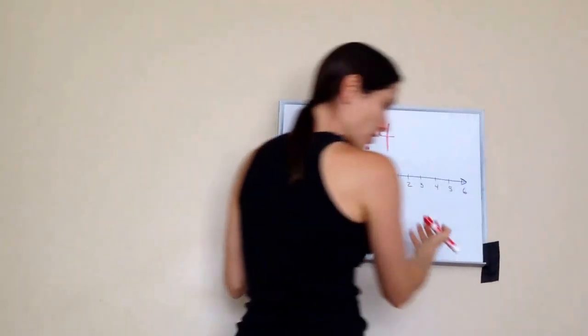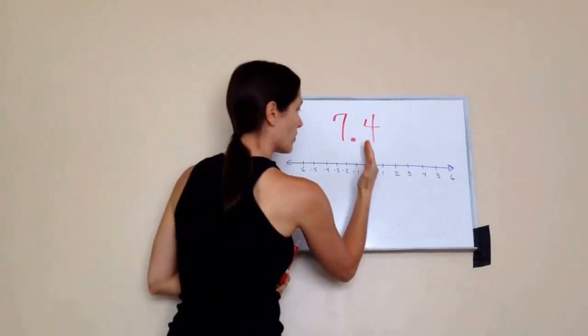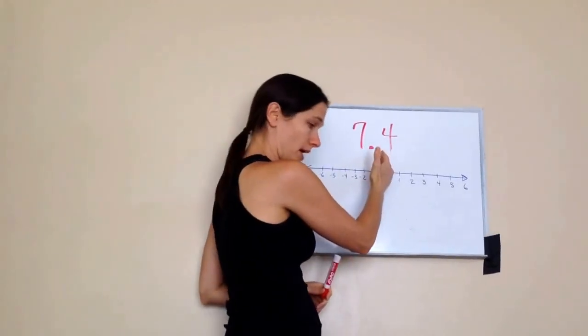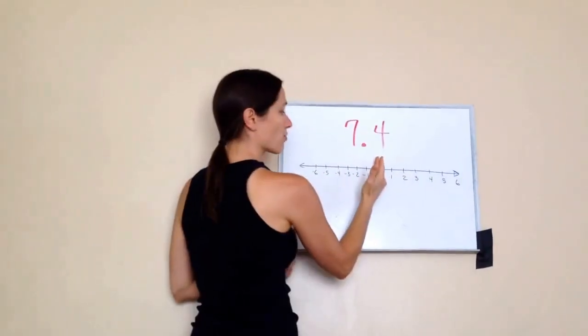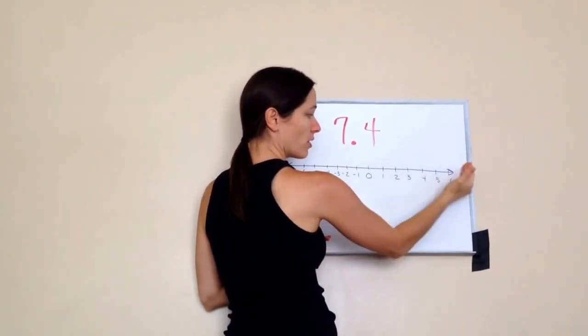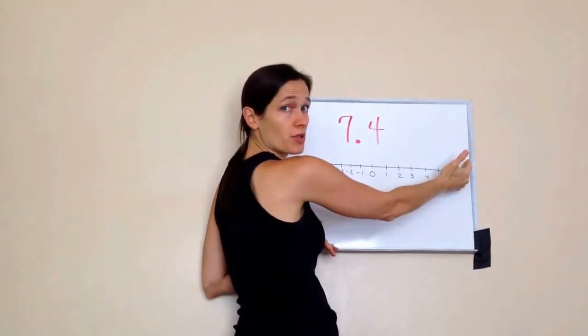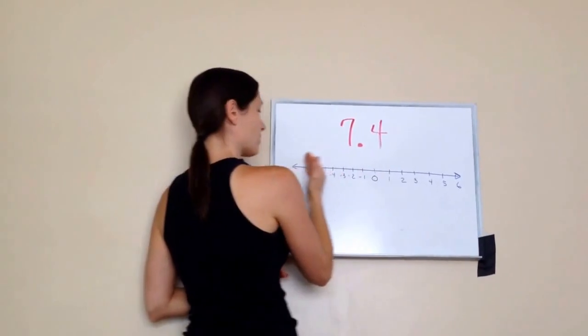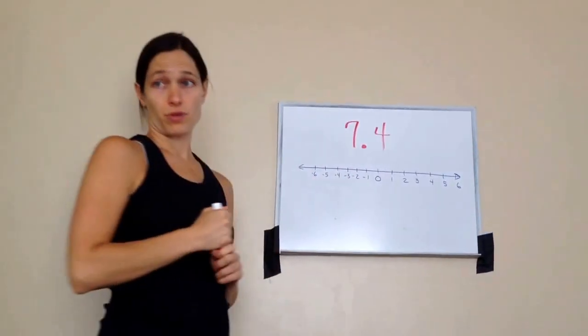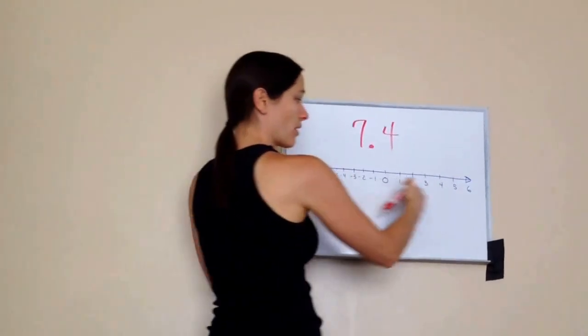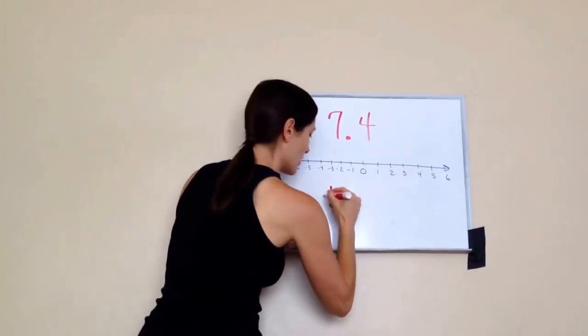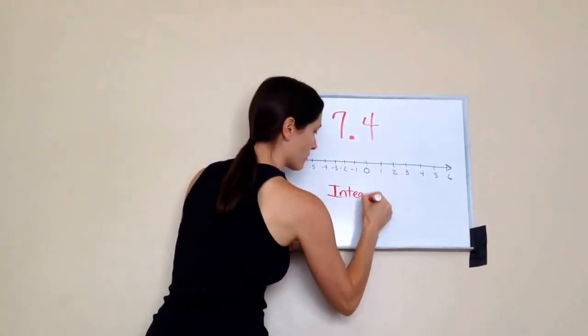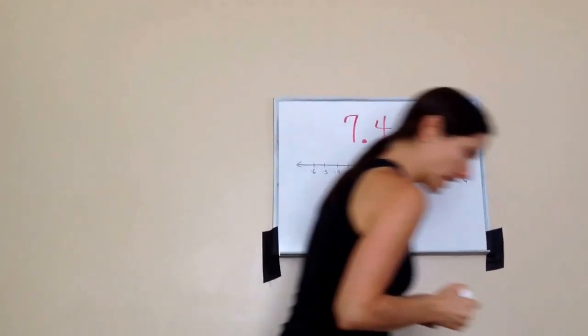This is called a number line, and this middle point is called the origin. Now, everything to the right of our zero are positive numbers, and everything to the left of zero are negative numbers. And all of these numbers that are on the number line are called integers. Write that down.